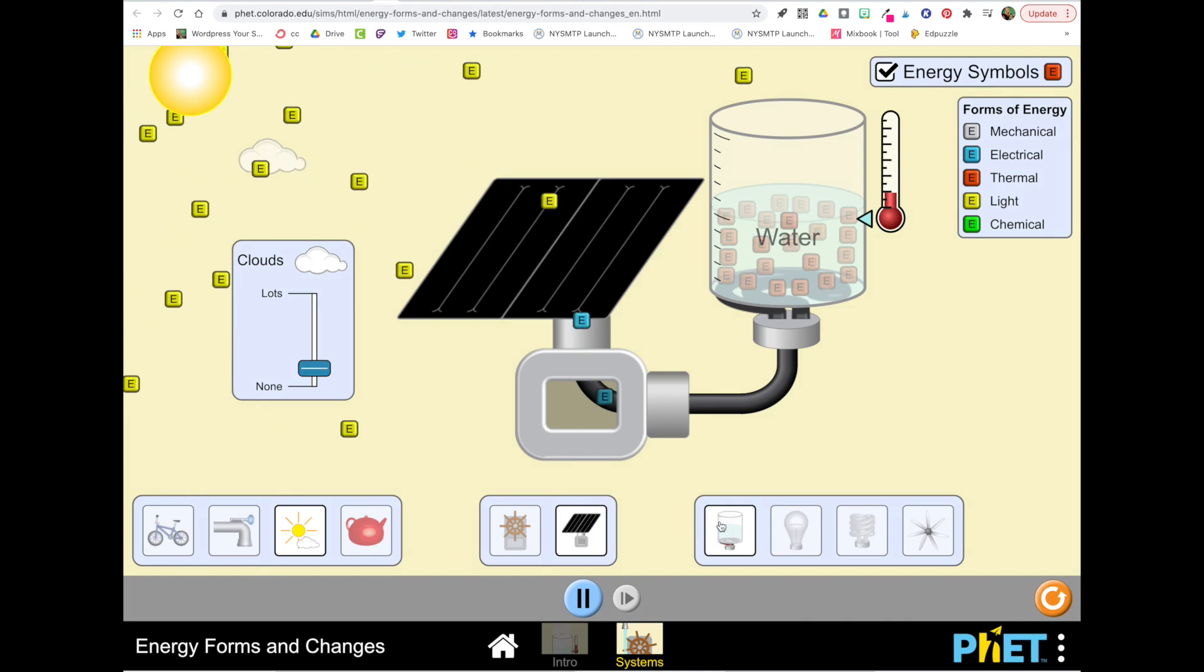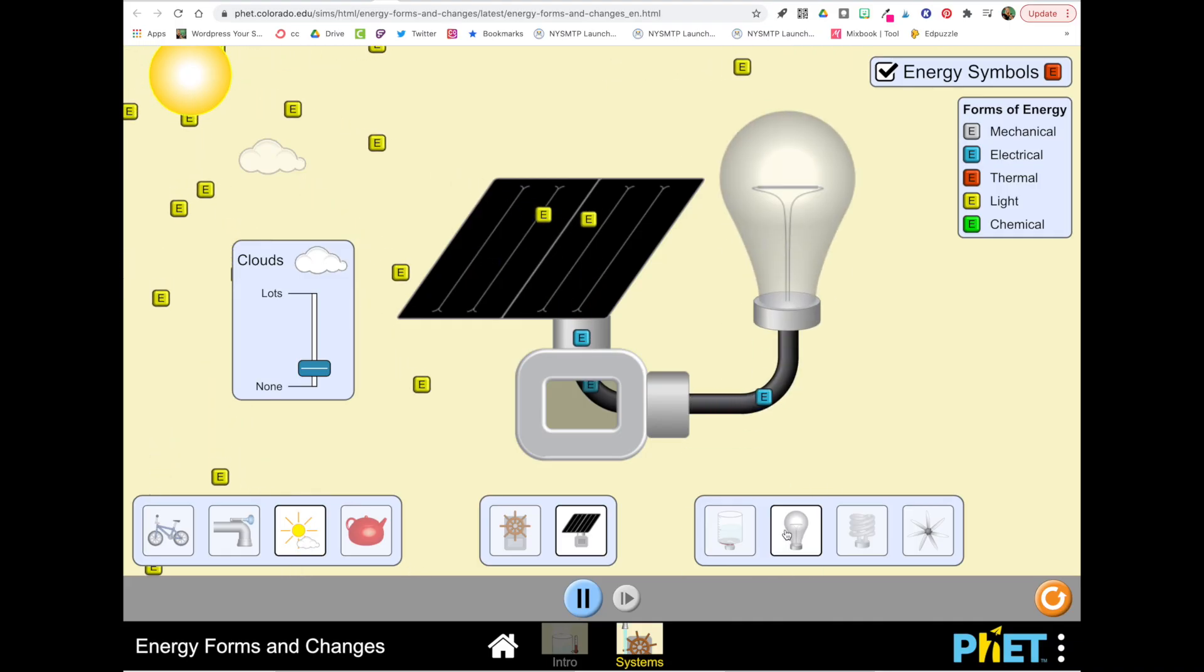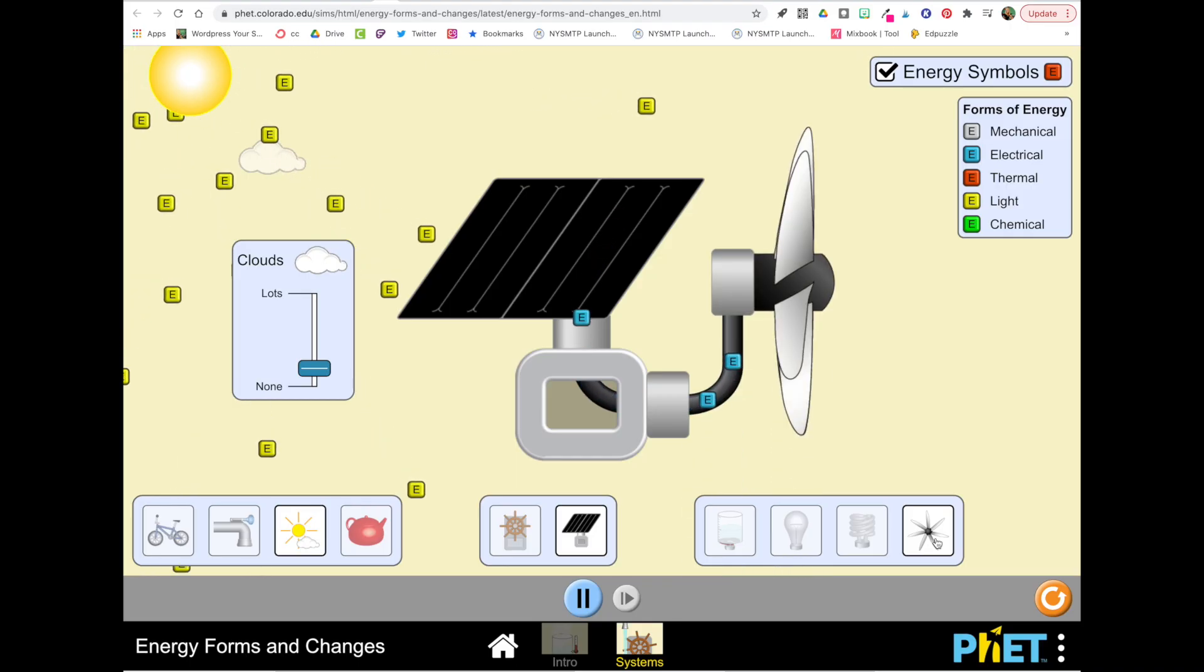Finally in the third section of the system you have the choice of a container of water, an incandescent light bulb, a fluorescent light bulb, and an oscillating fan.